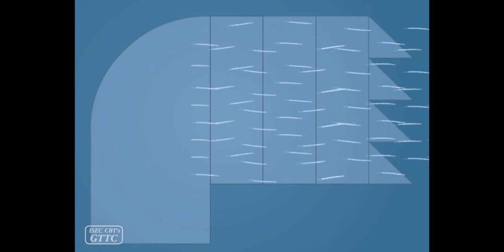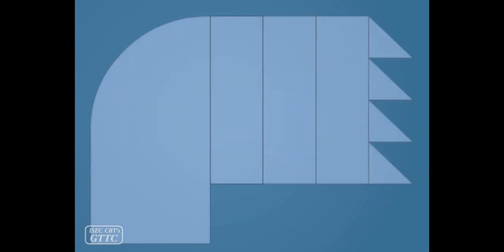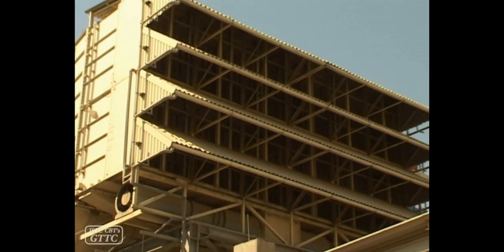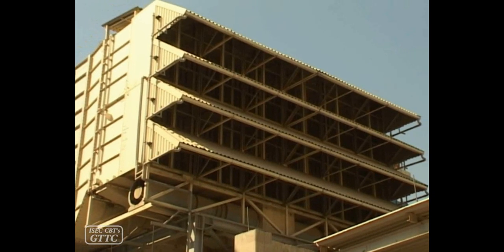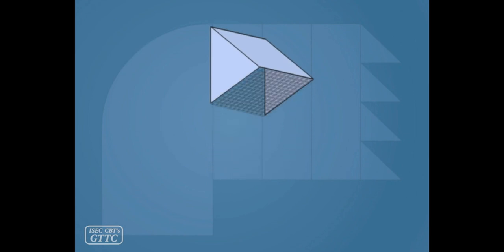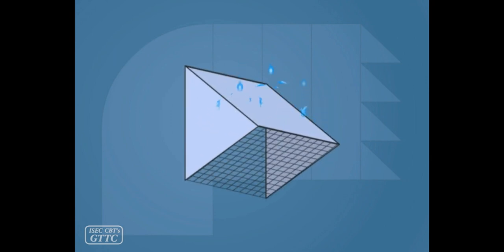The system, which is mostly used in dusty places, consists of several rows of filters to prevent tiny and large particles from entering. At the inlet of the system there exists a screen with large dimensions to prevent birds, sticks, and straws from entering. The part is also designed to prevent rain from entering the system.